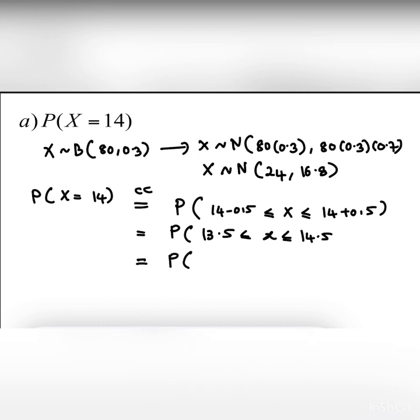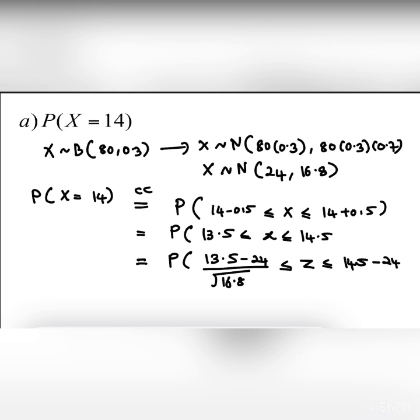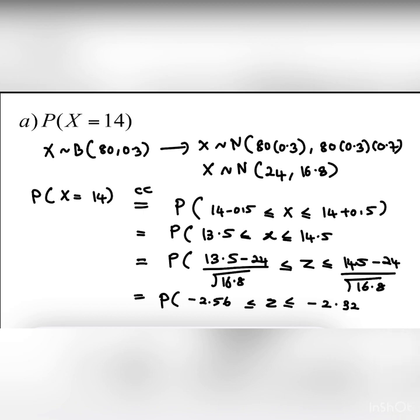So probability: z equals (39.5 minus 24) divided by square root of 16.8, less than or equal to z less than or equal to (40.5 minus 24) divided by square root of 16.8. We get the answer: probability z between negative 2.56 and negative 2.32. We take to two decimal places only. After we get the value, we make a graph of the normal distribution.